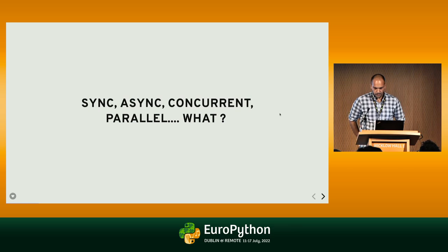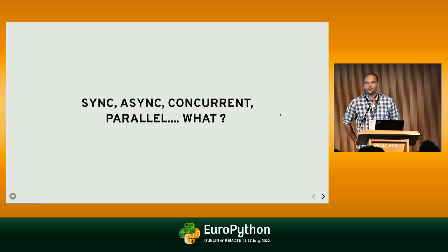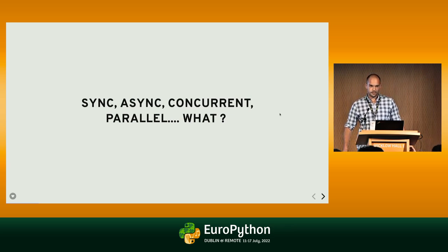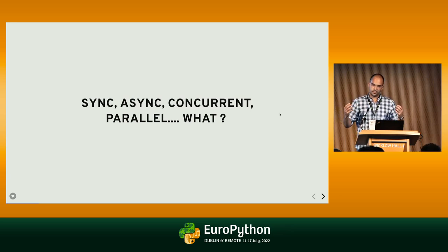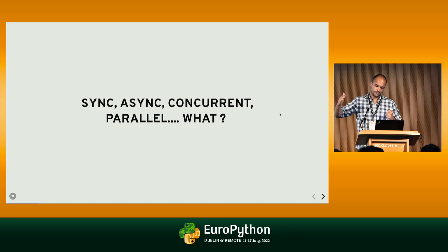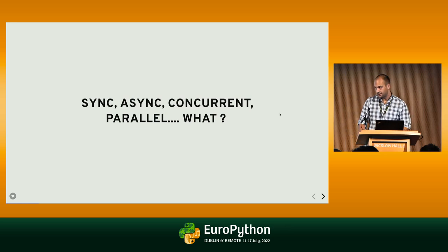So let's first go through the terms. What's the difference between sync and async? The standard Python code we use in Django is synchronous — it means we define a sequence of actions that will be executed one at a time. Asynchronous code is another pattern: you define a set of actions that need to be executed, not necessarily in the same order.